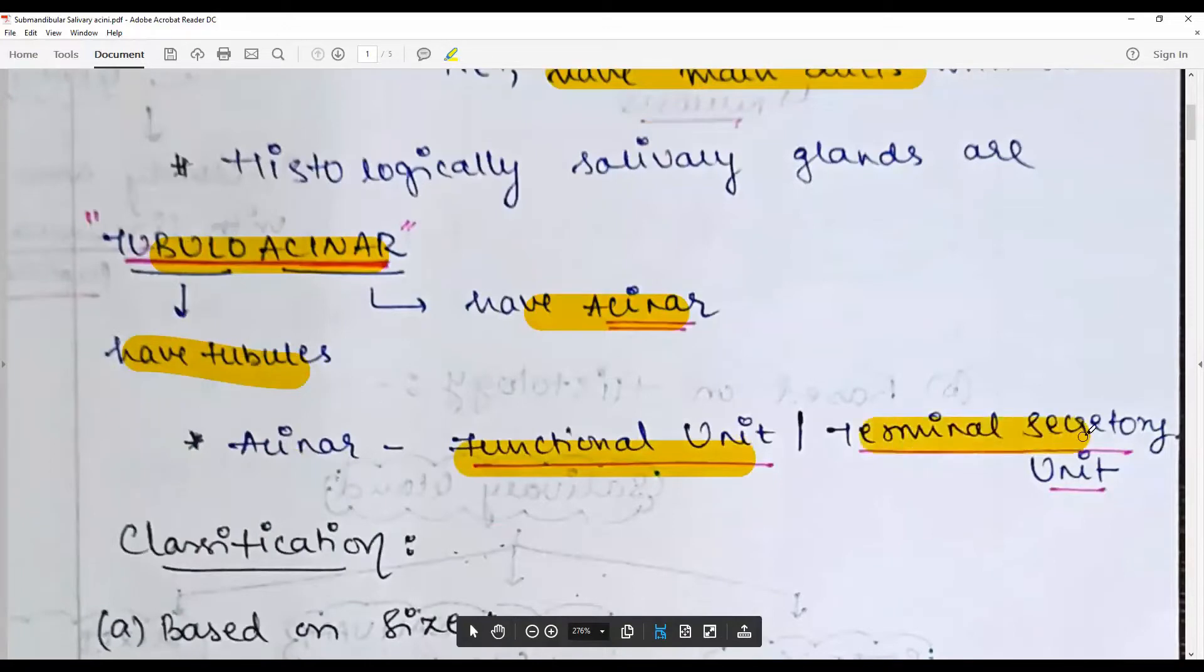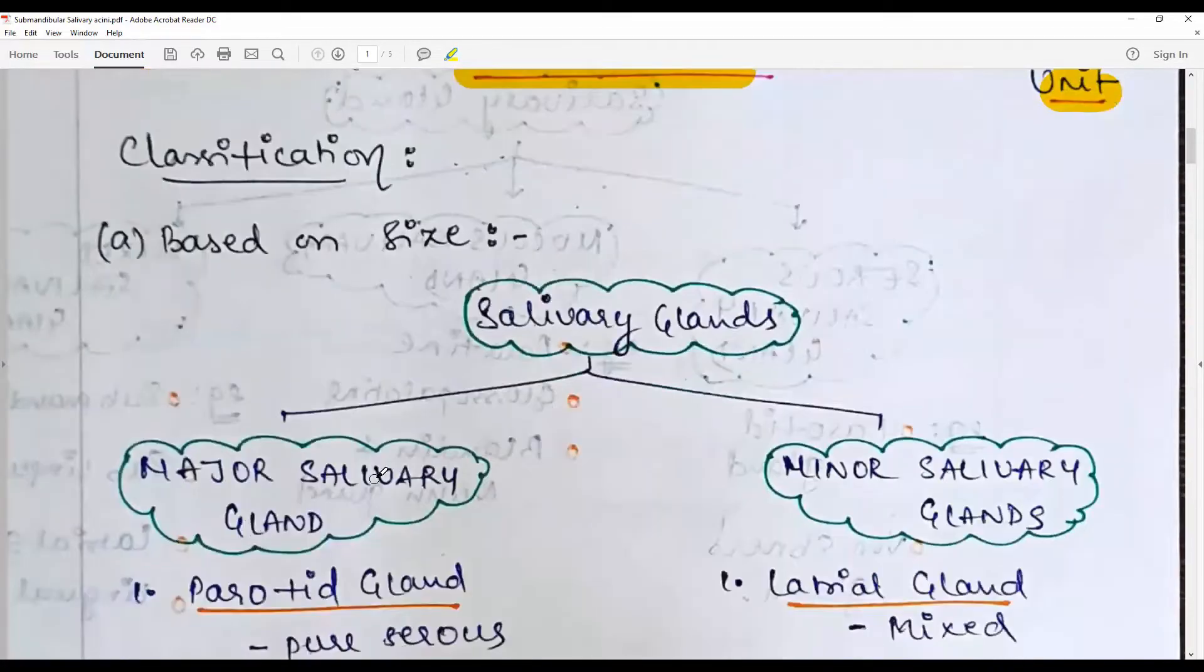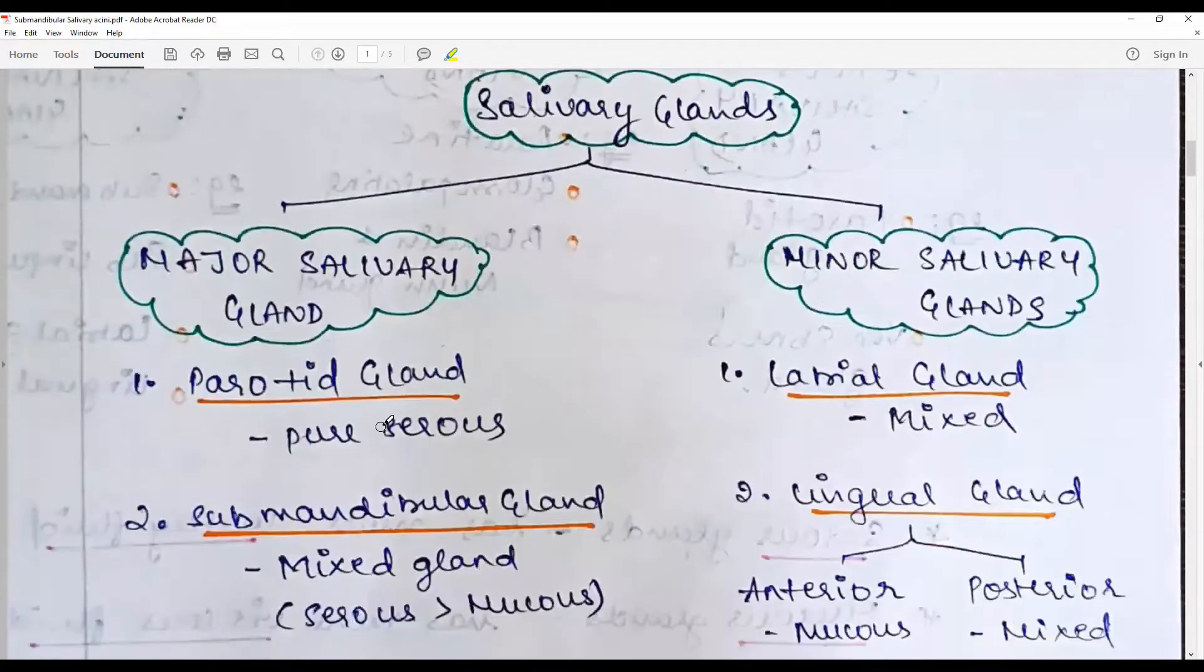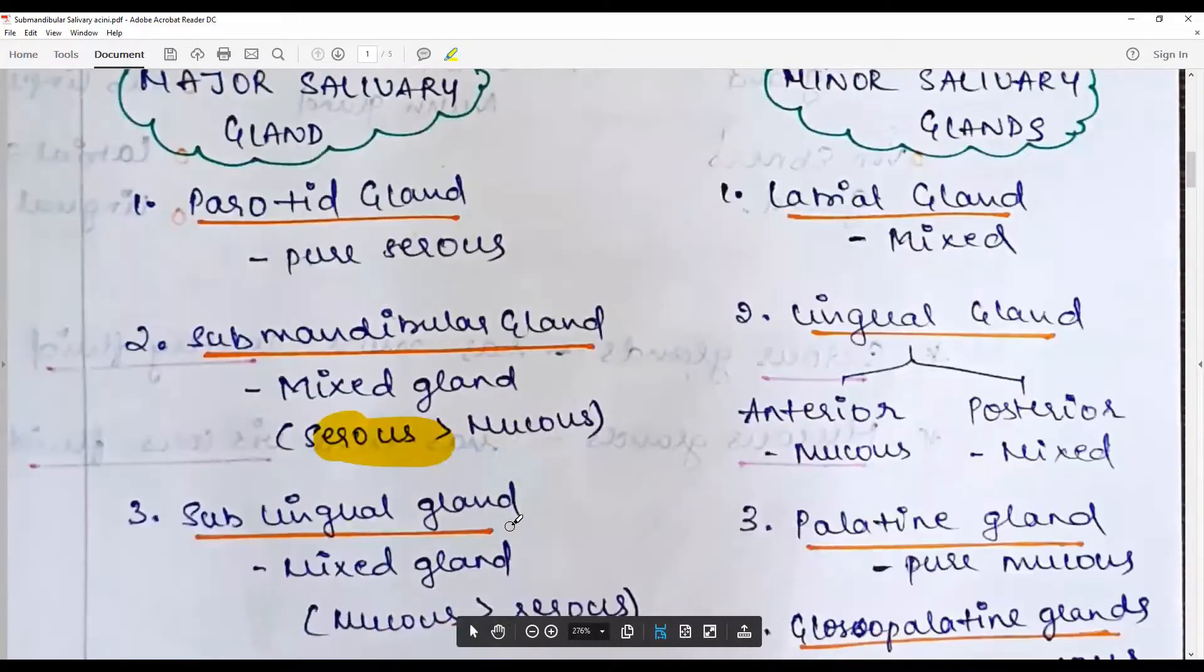Classification based on size: salivary glands are classified as major salivary gland and minor salivary gland. Major salivary glands include parotid gland (serous), submandibular (mixed, serous predominance), and sublingual (mixed, mucus predominance).